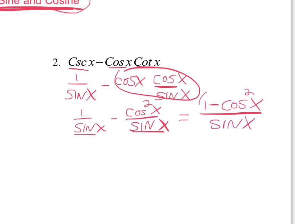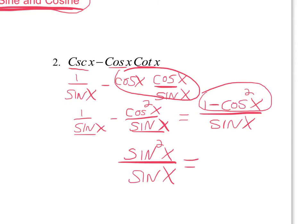Now this is what should stand out when you do that — that is a Pythagorean identity. One minus cosine squared of x equals sine squared of x. So you have sine squared of x over sine of x. One sine cancels top and bottom, so it just equals sine of x. And that's our answer.